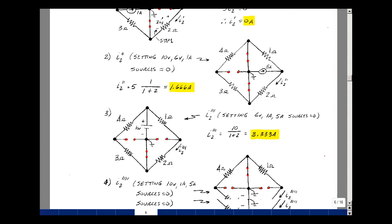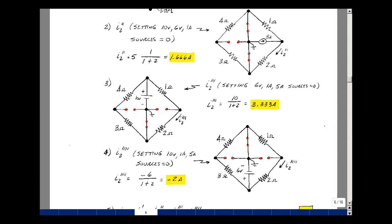And then lastly, let's consider the last source. This is our 6-volt source. Plus sign was at the bottom. And then we're going to open the two current sources and short the 10-volt source. Current in this direction would be 6 volts divided by 3 ohms. But I want the current in the other direction, so I'll change the sign of that. 6 volts divided by 3 gives me minus 2 amps.